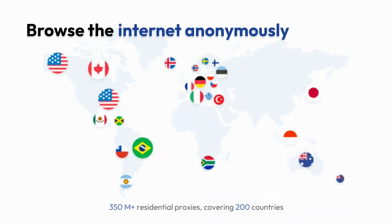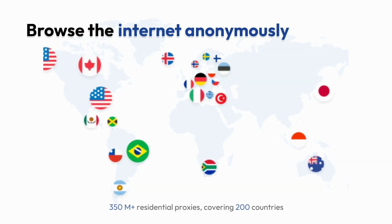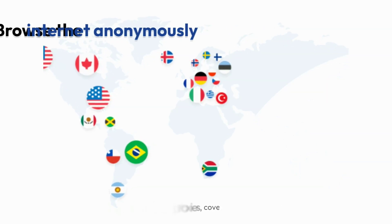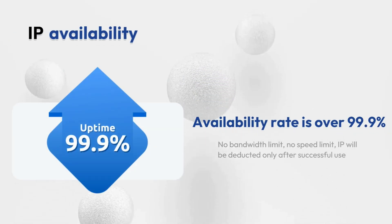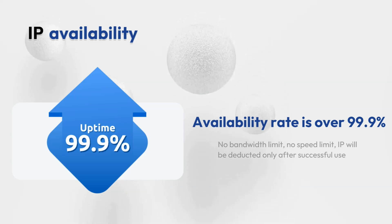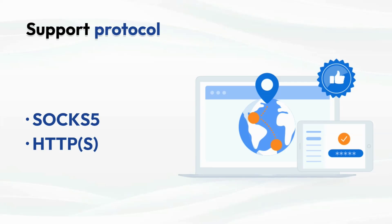PiAs5Proxy currently has 350 million residential proxies covering 200 countries. There is no bandwidth limit and no speed limit — IP will be deducted only after successful use, with an availability rate of over 99.9%. It currently supports SOCKS5 and HTTPS protocols.